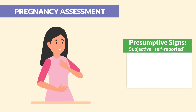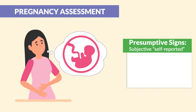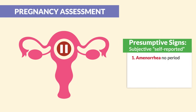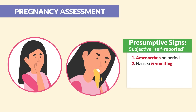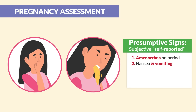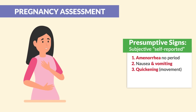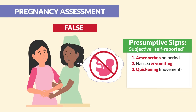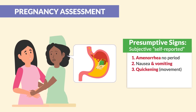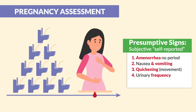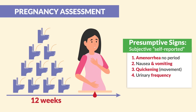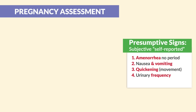Starting with presumptive signs of pregnancy. These are known as subjective or self-reported signs — unconfirmed signs where the client thinks they are pregnant based on subjective data. First, we have amenorrhea, so no period. Next is nausea and vomiting, which can also be from stress. Quickening, or movement in the belly from a possible baby, is self-reported and may not be confirmed by a provider — it may just be stomach gurgling. Next is urinary frequency, very common in the first trimester due to hormonal and anatomical changes. And lastly, breast tenderness and fatigue.